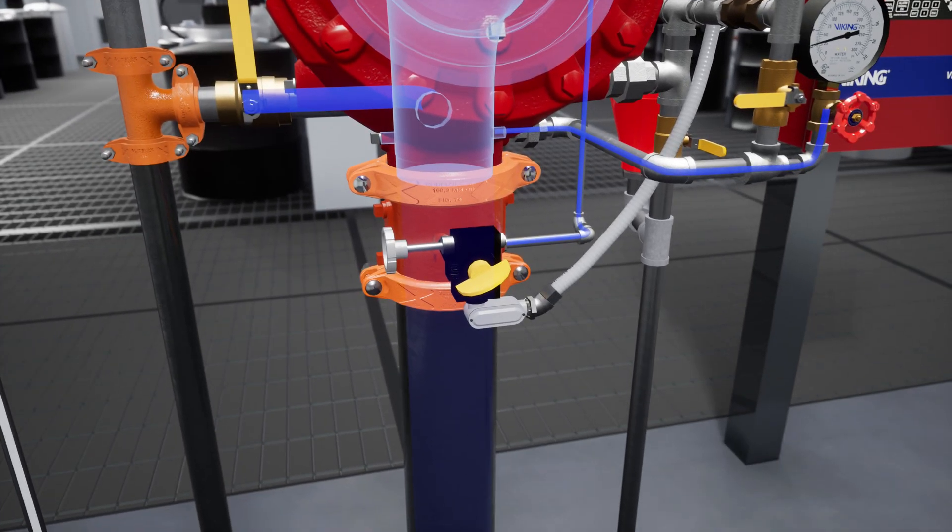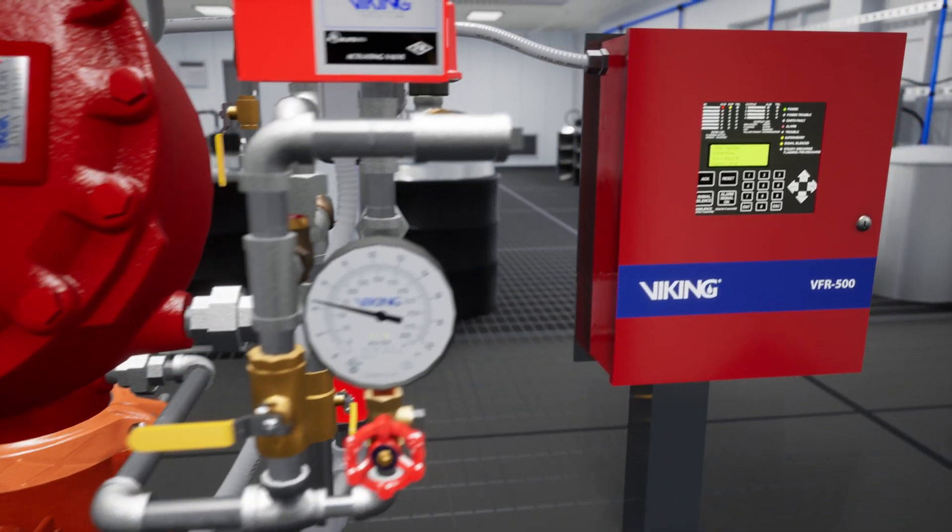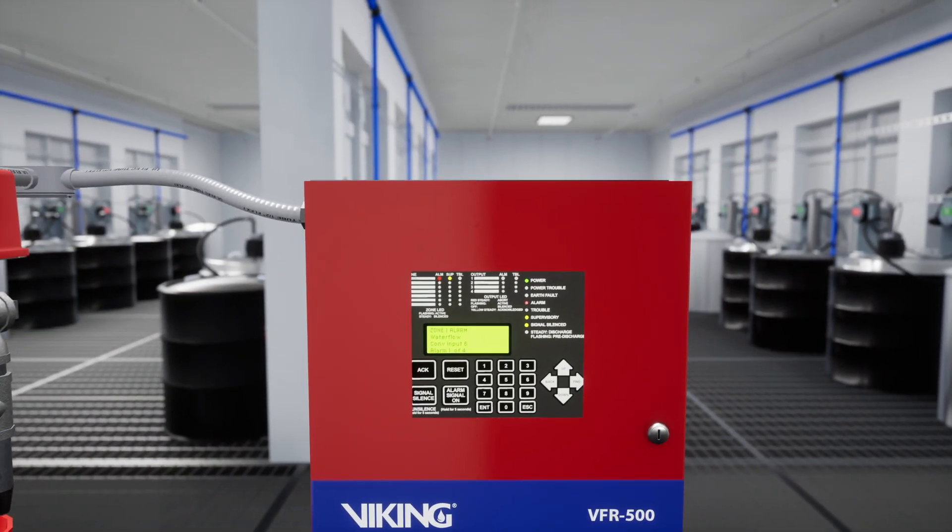Now fully open the water supply control valve. After the system water pressure is restored, any alarm panels that were activated will need to be reset to clear any active alarms.